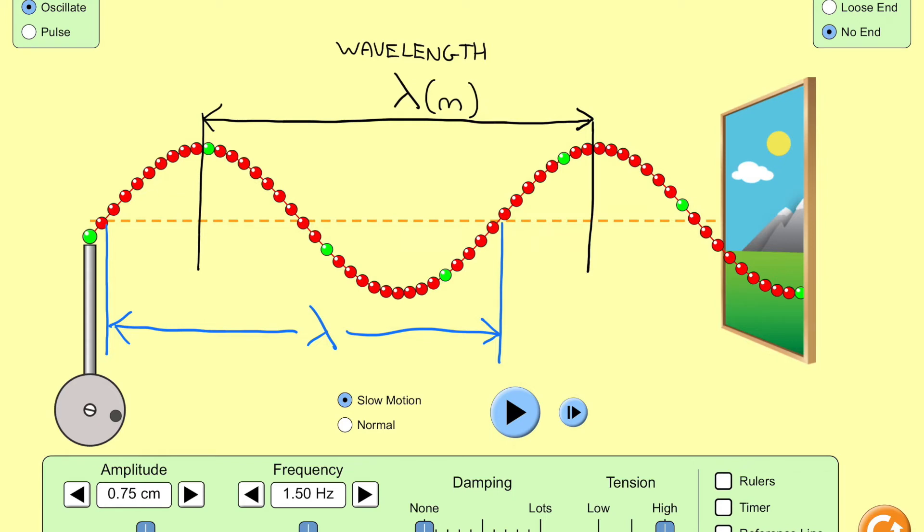Like most physics quantities we give the wavelength a symbol. Specifically it's the Greek symbol lambda, and it is always measured in meters. Whether it's a light wave, water wave, pressure wave, wavelength is always in the SI unit of meters.